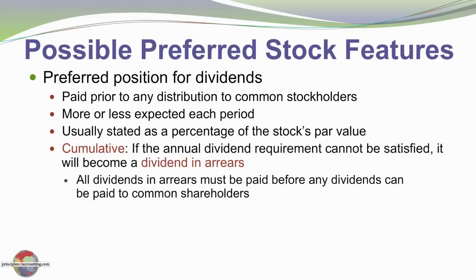Some preferred stocks are cumulative. This means that if a company fails to pay a dividend in a particular period, that dividend has to be paid at some point in the future before the common stock. Dividends that have been missed on cumulative preferred stock are called dividends in arrears. They have to be brought current before other distributions can be made to other classes of shareholders. Non-cumulative: if a dividend is missed, it's just lost to history.